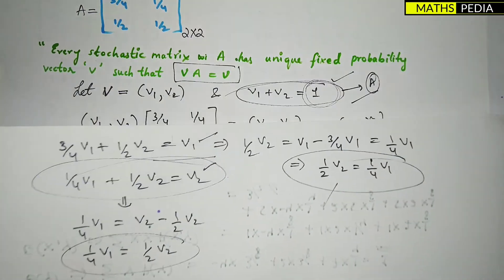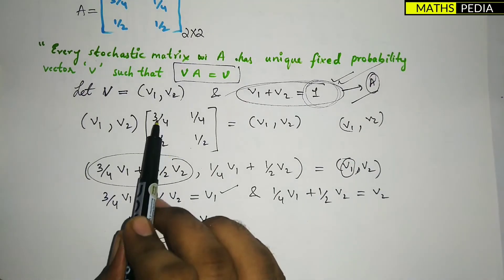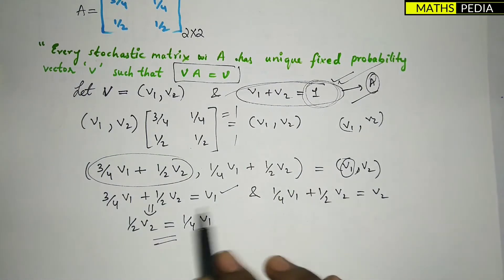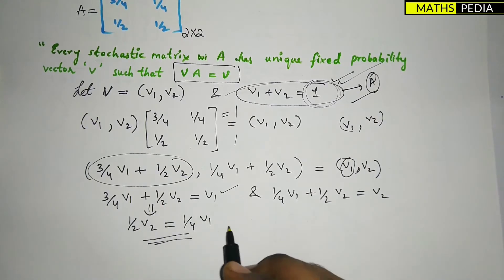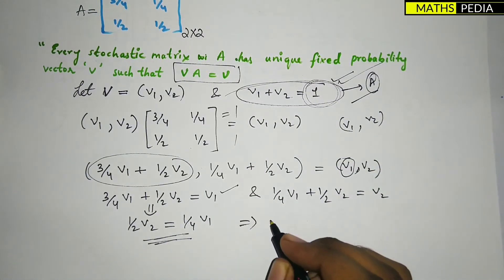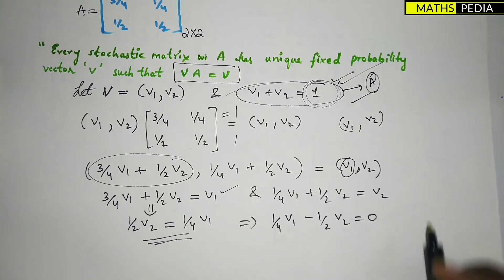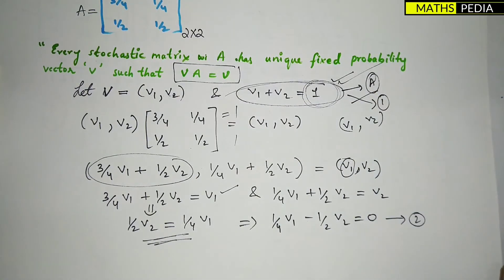So we choose one equation from the matrix multiplication — which simplifies to (1/4)V1 − (1/2)V2 = 0 — and the second equation is V1 + V2 = 1. We will now solve these two equations together using any method.